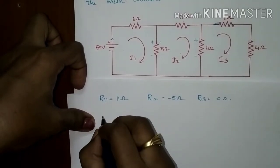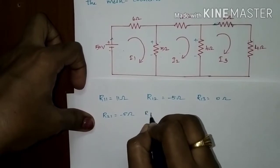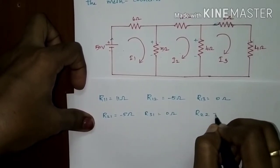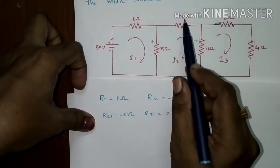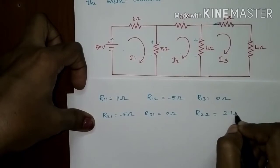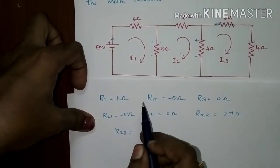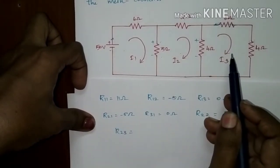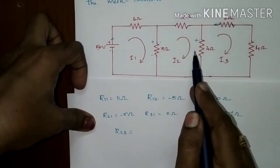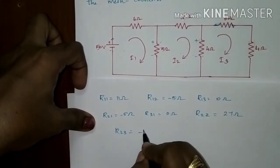Since the resistance matrix is symmetric, R21 equals minus 5 ohms and R31 equals 0. The self-resistance of the second mesh R22 is 5 plus 2 plus... totaling 27 ohms. R23 is the resistance common to the second and third mesh; the common value is 4 ohms, and checking the current direction — flowing top to bottom vs. bottom to top, opposite directions — so R23 is minus 4 ohms.